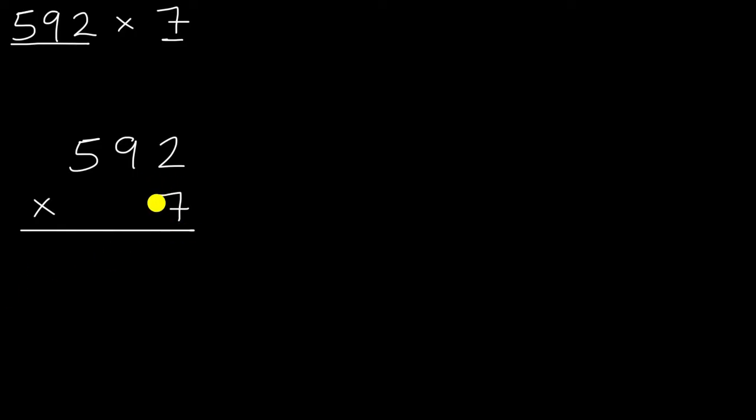The way you think about it is, I'm just going to take each of these places and multiply it by the 7. So for example, if I'm taking those 2 ones and I'm multiplying it times 7, well that's going to be 14 ones. There's no digit for 14. I can only put 4 of those ones over here, and then the other 10 ones I can express as 1 ten. Sometimes when people learn it, they say, 2 times 7 is 14, I write the 4 and I carry the 1. But all you're doing is you're saying, 14 is 1 ten plus 4 ones.